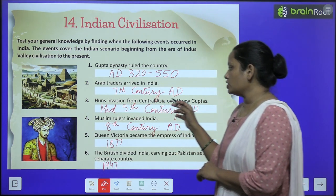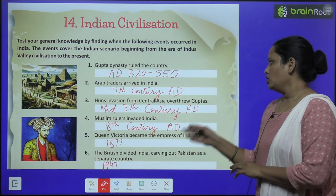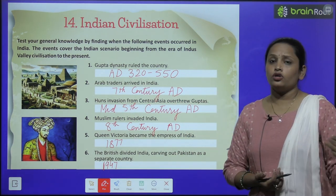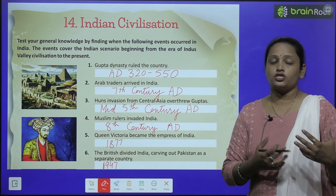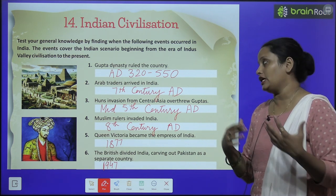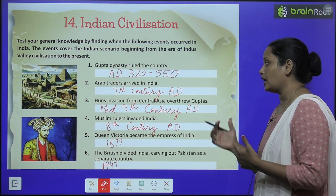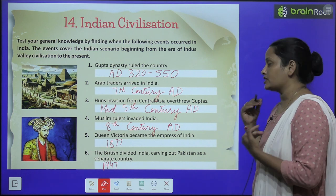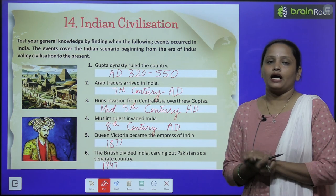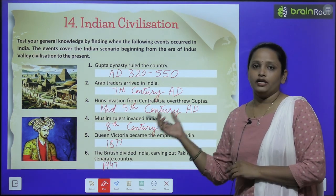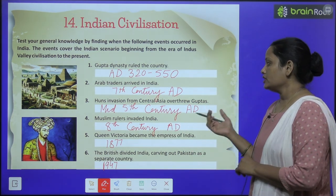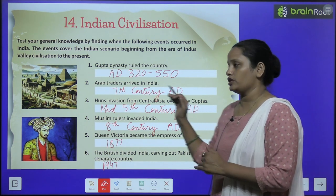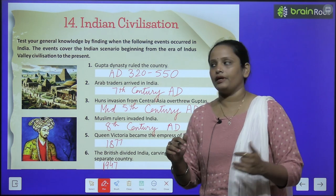Huns invasion from Central Asia over the Guptas. Huns joh thai unhoon ne invade kia tha, Central Asia ko aur Guptas ko maha se bhaga diya tha. Kab bhaga diya tha? Mid 5th century AD, matlab 5th century ke mid mein.